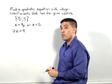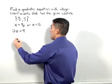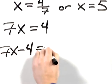And then I'm going to subtract 4 from both sides of the equation. You end up with 7x minus 4 equals 0.